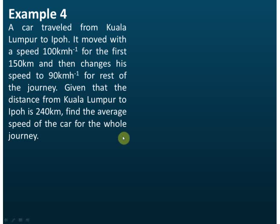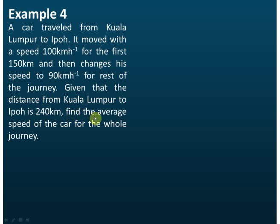Now let's see another example with a similar question. A car travels from Kuala Lumpur to Ipoh. It moved with a speed of 100 kilometers per hour for the first 150 kilometers, and then changes its speed to 90 kilometers per hour for the rest of the journey. Given that the distance from Kuala Lumpur to Ipoh is 240 kilometers, find the average speed of the car for the whole journey. We learned that average speed equals total distance divided by total time.